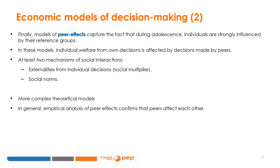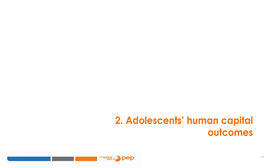In this section, we will analyze adolescents' human capital outcomes — their education, employment, and health outcomes. For each specific outcome, we will begin by describing the current state in different regions of the world, followed by discussions about which policies have been found to affect the outcomes.